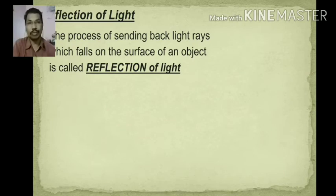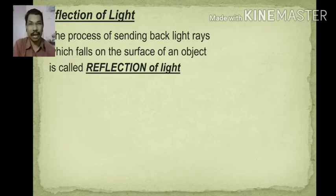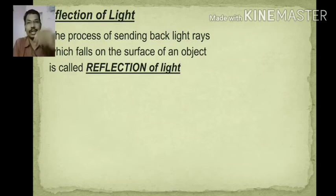What is reflection of light? The process of sending back light rays when they fall on the surface of an object is called reflection of light. Simply, bouncing back of light rays when they are incident on any surface is called reflection of light.